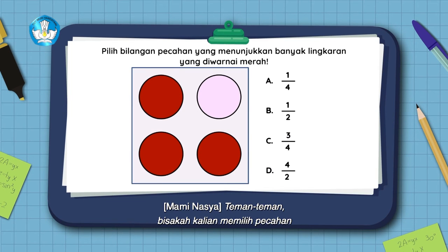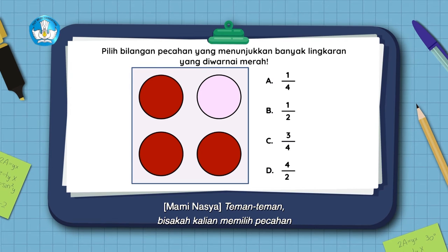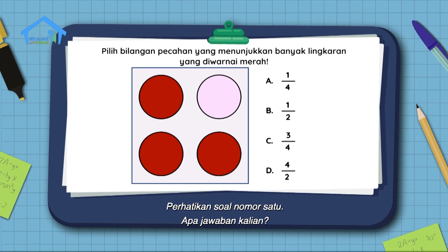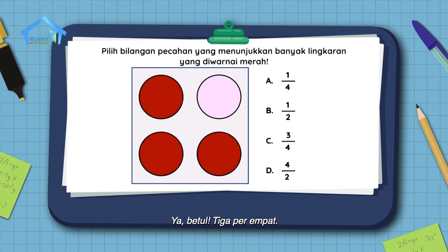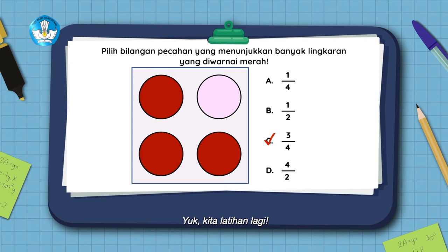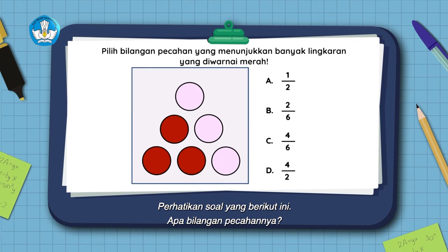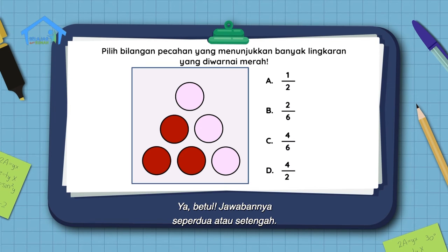Teman-teman, bisakah kalian memilih pecahan yang menunjukkan banyak lingkaran yang diwarnai? Perhatikan soal nomor satu. Ya, betul! Tiga per empat. Yuk kita latihan lagi. Perhatikan soal berikut ini. Apa bilangan pecahannya? Ya, betul! Jawabannya seperdua atau setengah.